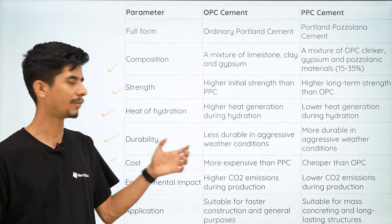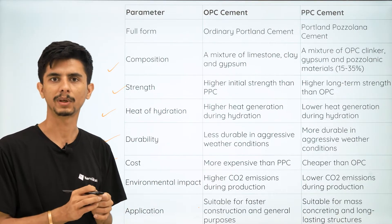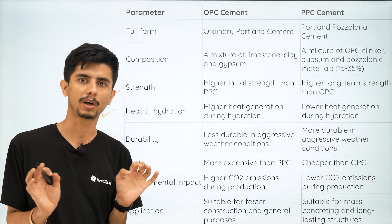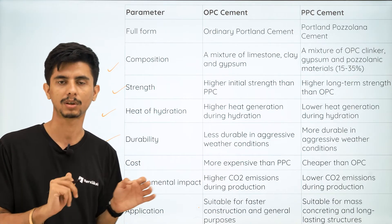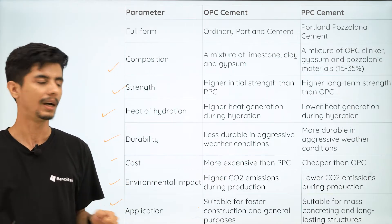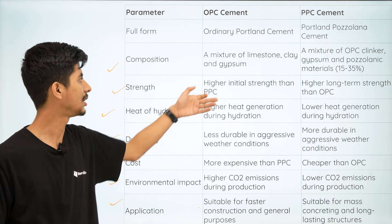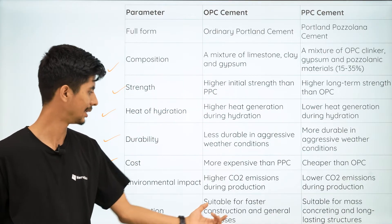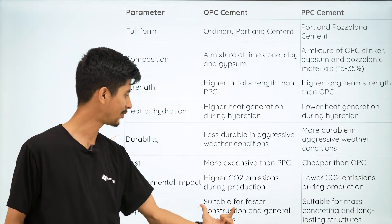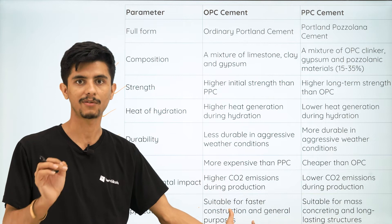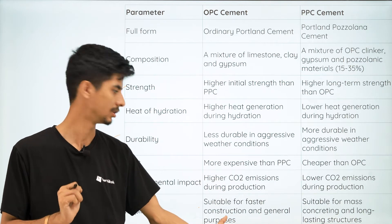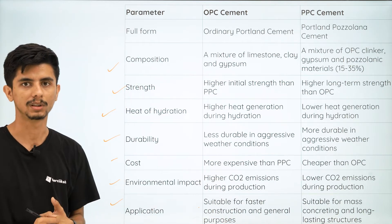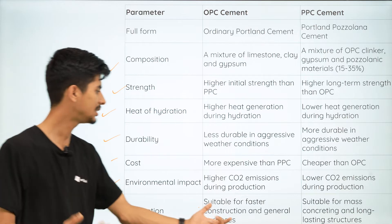For example, if you need to build a dam quickly, or if you're building road bridges that require faster construction and infrastructure, OPC is the choice. It is also used for general-purpose construction.